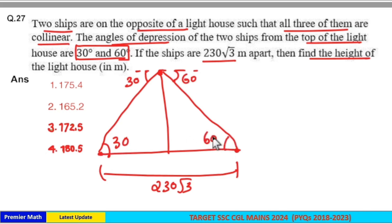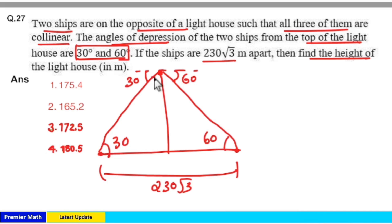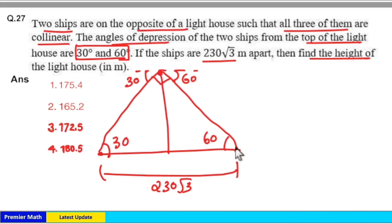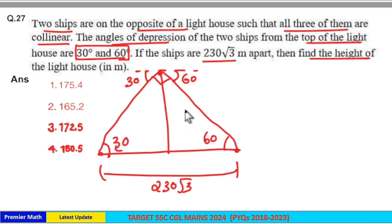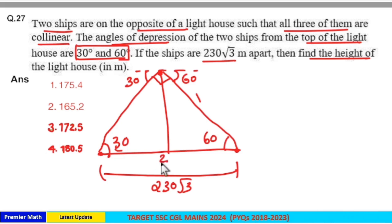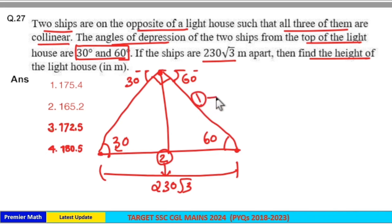Since the two angles are 30 and 60 degrees, the angle in between is 90 degrees. Take the whole large right angle triangle. Sin 30 equals 1/2, meaning the opposite side and hypotenuse are in the ratio 1:2. Since 2 parts equals 230√3, then 1 part equals 115√3.